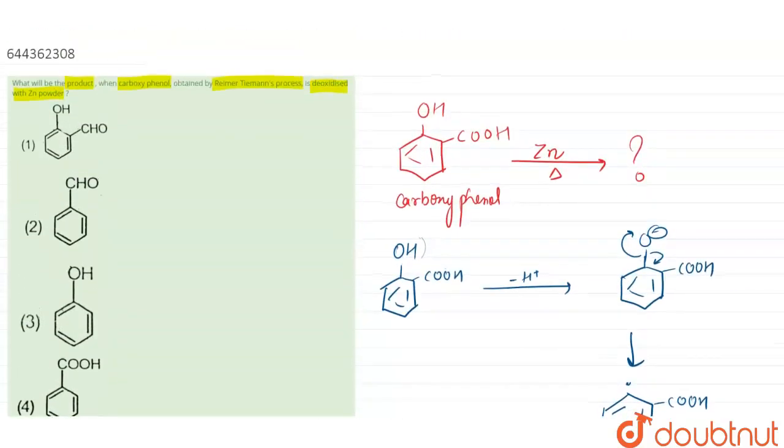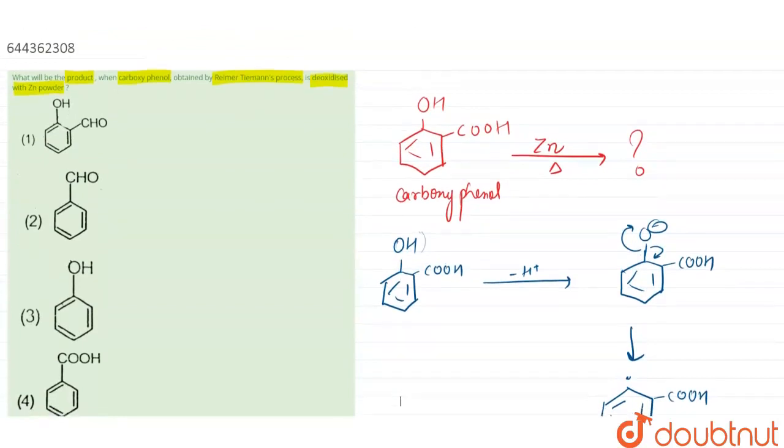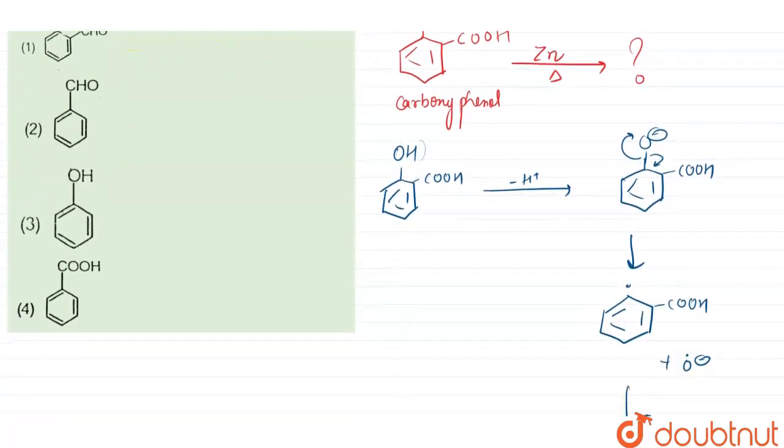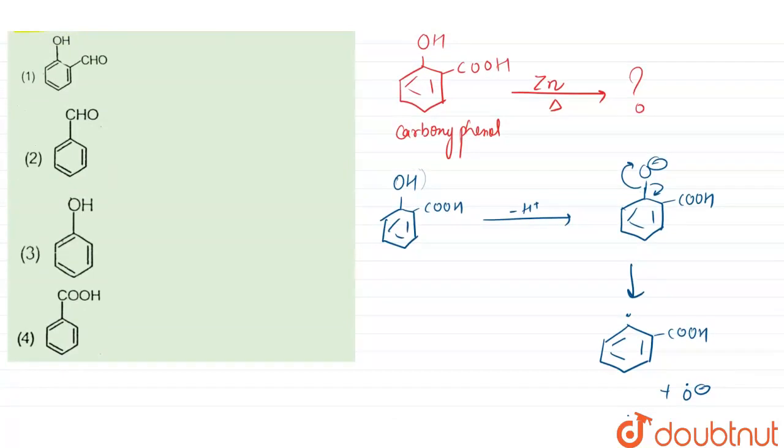Let us have a look at the options. Option number one is OH and CHO, this is salicylic acid. Yes, salicylic acid is obtained in Reimer-Tiemann reaction but not on the reduction of carboxyphenol, so this option is incorrect. Next is benzaldehyde. Benzaldehyde is obtained when salicylic acid is reduced by zinc dust, so this option is also eliminated.